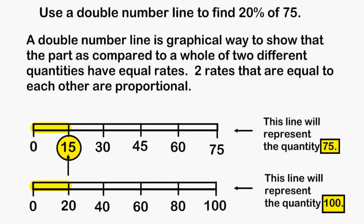A double number line is a graphical way to show that the part as compared to a whole of two different quantities have equal rates. Two rates that are equal to each other are proportional.